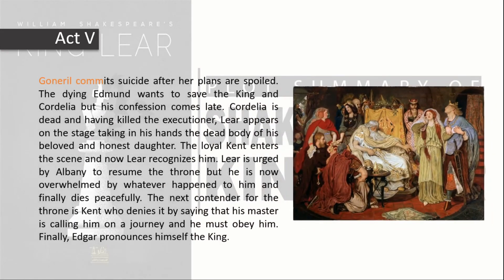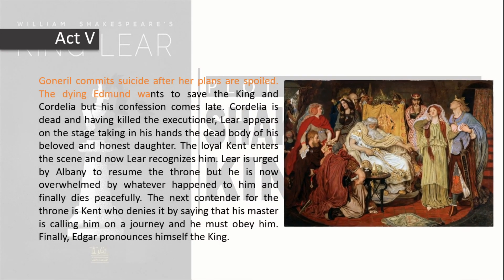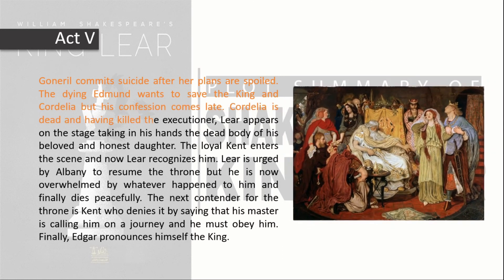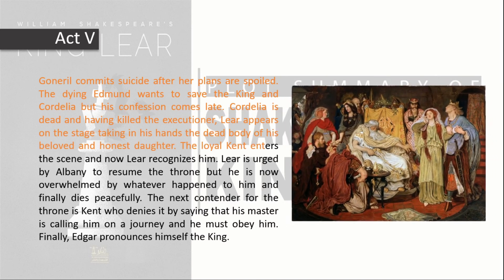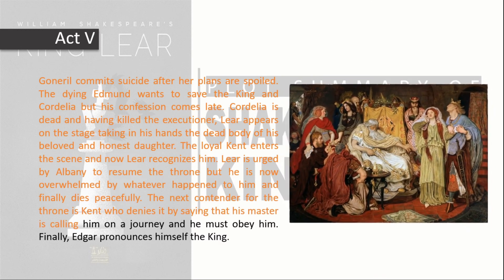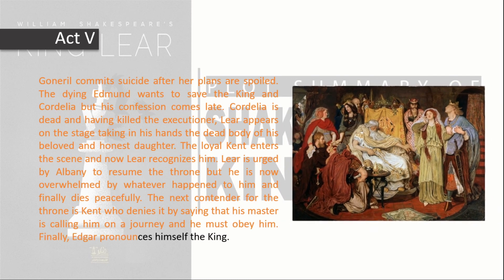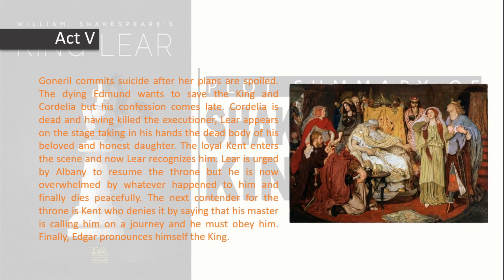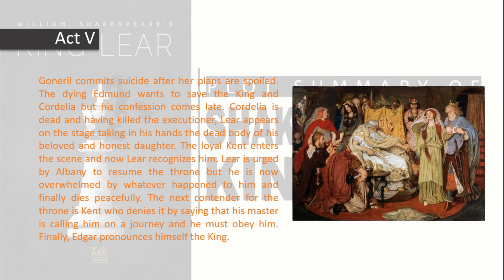Goneril commits suicide after her plans are spoiled. The dying Edmund wants to save the king and Cordelia but his confession comes too late. Cordelia is dead, and having killed the executioner, Lear appears on stage carrying the dead body of his beloved and honest daughter. The loyal Kent enters the scene and Lear recognizes him. Lear is urged by Albany to resume the throne but is overwhelmed by all that has happened and finally dies peacefully. Kent refuses the throne saying his master is calling him on a journey. Finally, Edgar pronounces himself king.